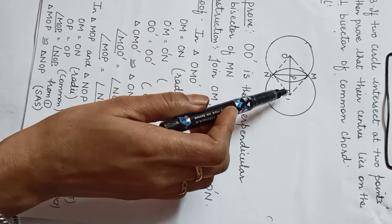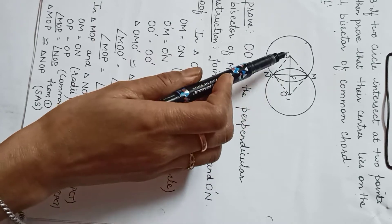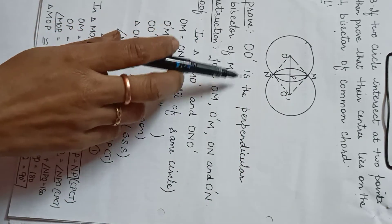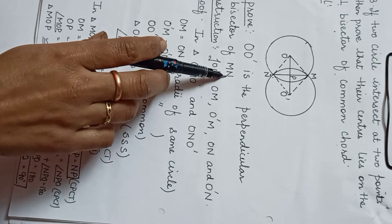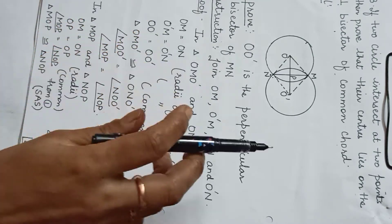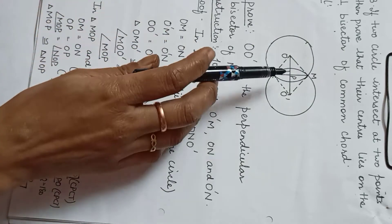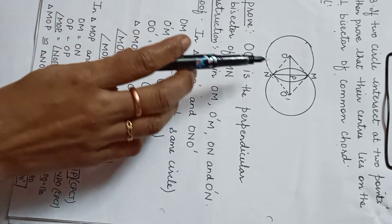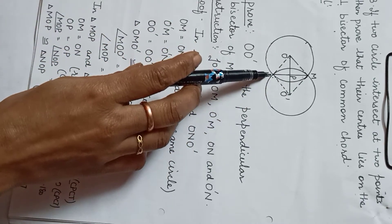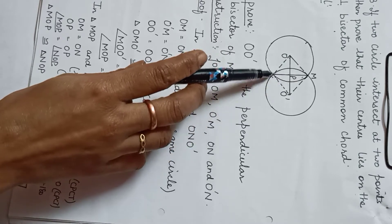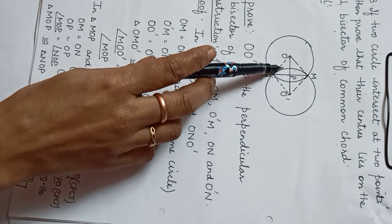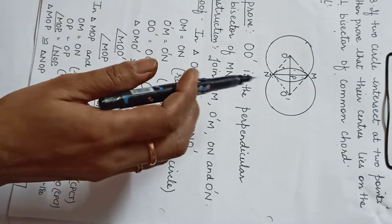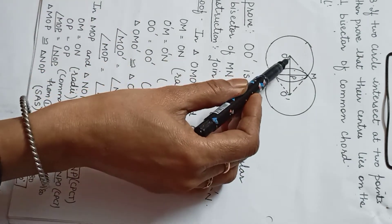We join the line OO' — the centers of the circles — and we need to prove OO' is the perpendicular bisector of MN. To prove OO' is the perpendicular bisector, we need to prove angle MPO equals 90 degrees and MP equals PN. To prove MP equals PN, we need to prove these 2 triangles are congruent. But first, before proving triangles MOP and NOP congruent, we take triangle OMO' and ONO'.